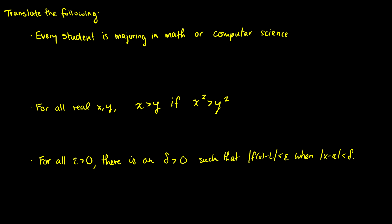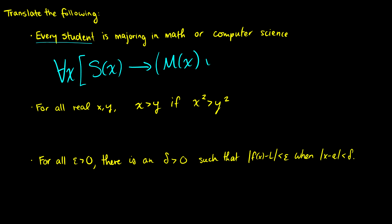Our first question is: every student is majoring in math or computer science. I'm not going to define anything explicitly, but I just want to show you the process. So first we have 'every student,' which means for all x, if x is a student — we call that S(x) — then that student is going to major in math or major in computer science.